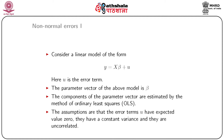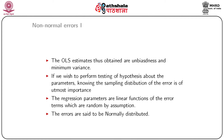The assumptions are that the error term u has expected value zero, has a constant variance (that is, they are homoscedastic), and the error terms are uncorrelated, meaning there is no autocorrelation. The OLS estimates obtained from a linear model satisfying all these assumptions are called unbiased and are of minimum variance — that is, among the class of all estimates, the OLS estimates will have minimum variance.